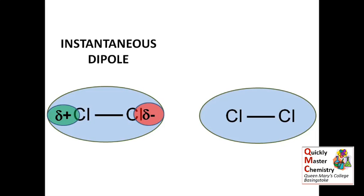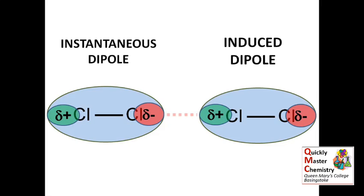The effect of this instantaneous dipole is to induce another dipole in a neighbouring molecule. So you can see that in the molecule on the right now, we've also got this partial positive charge, delta plus, and partial negative charge, delta minus. It's called an induced dipole, because it's formed as a result of the instantaneous dipole in the neighbouring molecule.